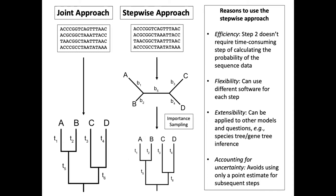Another reason why we might want to use the stepwise approach is flexibility: you can use different software for each step. For example, if you have a genetic sequence evolution model only available in one software package and a clock model only available in another, you can't do that under the joint analysis, which requires all models to exist in the same software package. But with the stepwise approach, you could use one package for step one and another for step two.